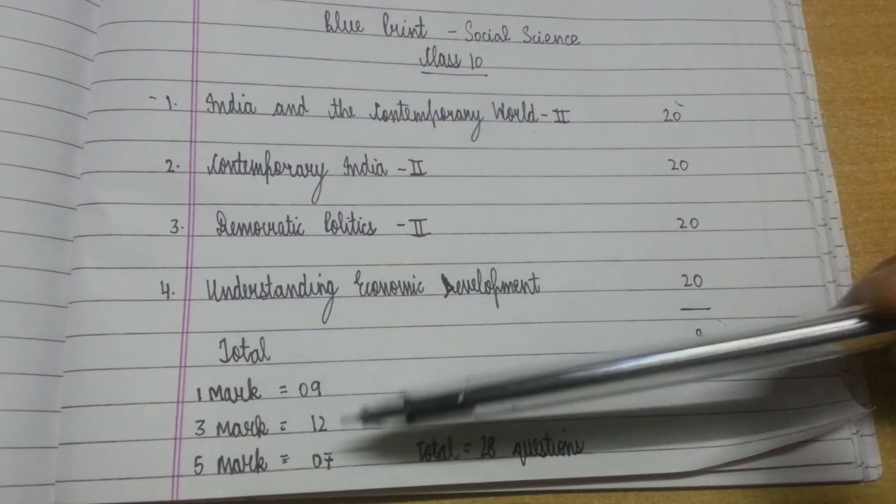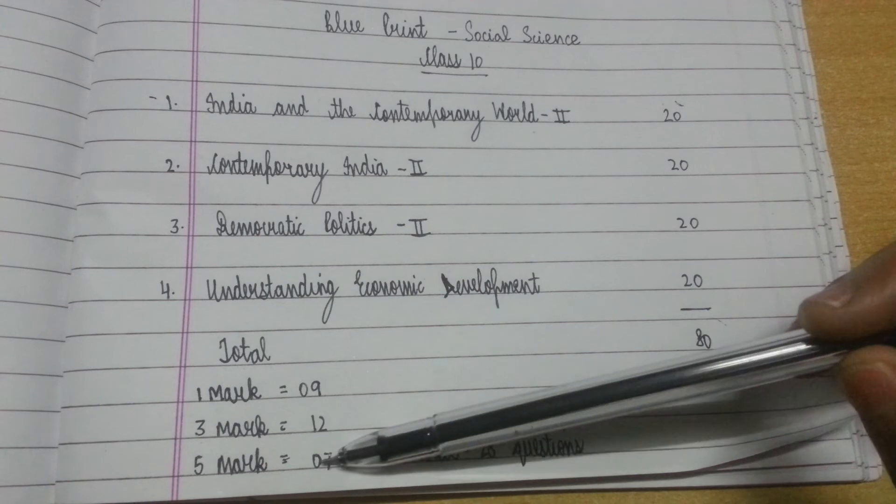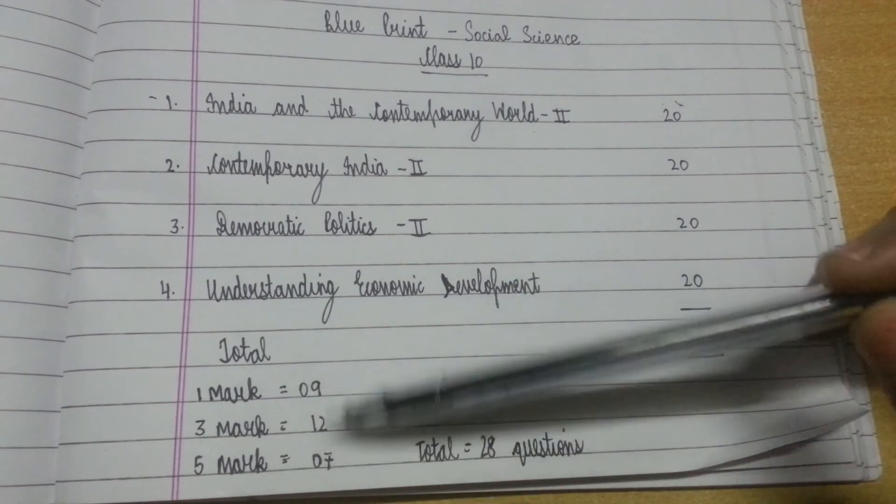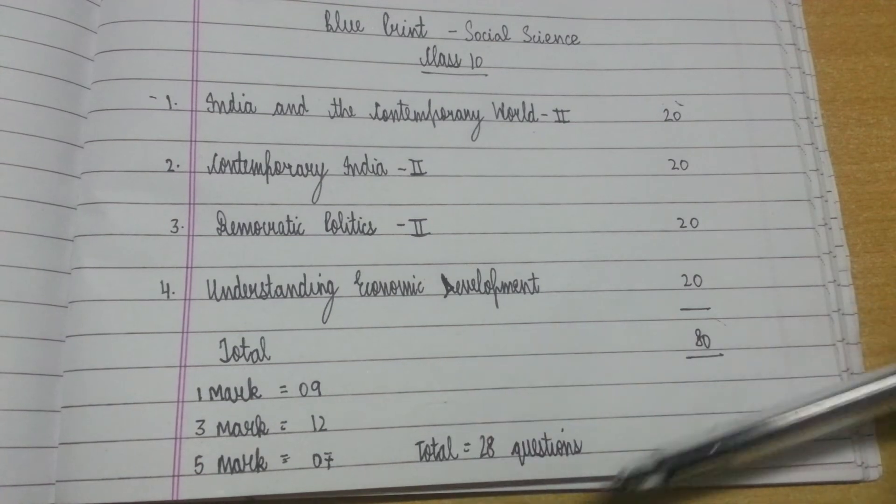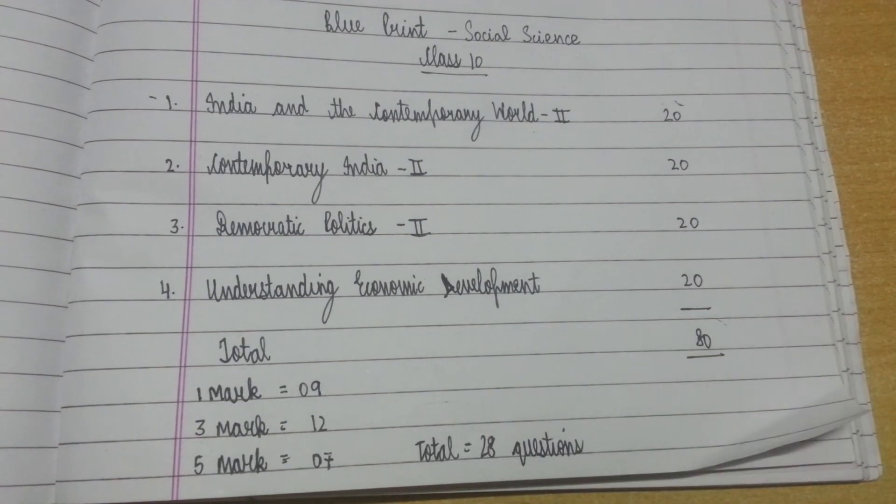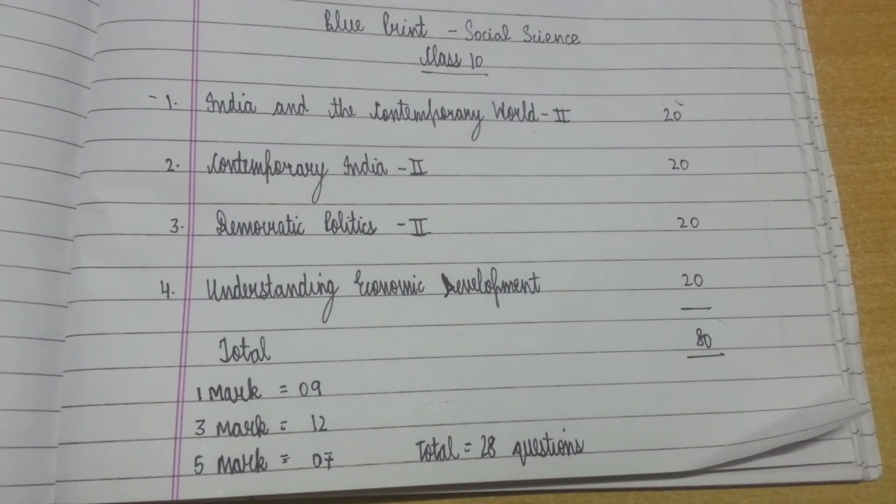The total will be 80 marks and total number of questions will be 28 questions. So this is all about the marking scheme for Social Science Class 10 in CBSE 2019 examination.